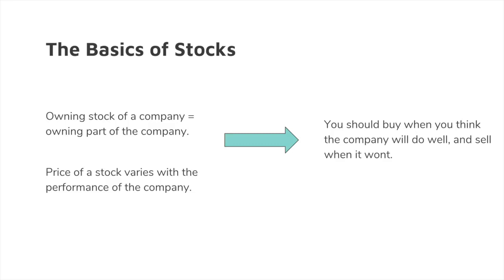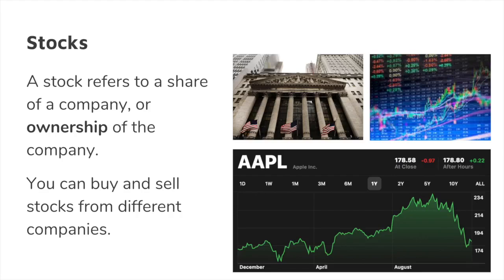To summarize: if owning stock of a company means owning part of it, and the price of a stock will vary with the performance of the company, then you should buy the stock when you think the company will do well, and sell it when you think it won't. Looking back at the graph, if you see that peak and think the stock is going to decline, you would sell your stock at that moment. But if you see a very sharp dip, you might want to consider buying the stock because the price might go up in the future.